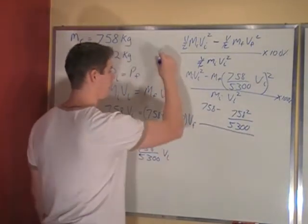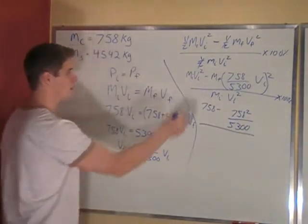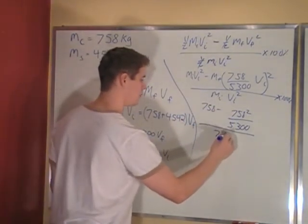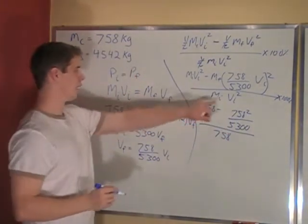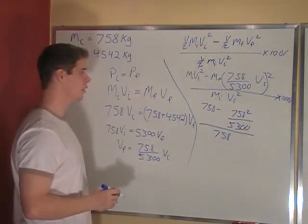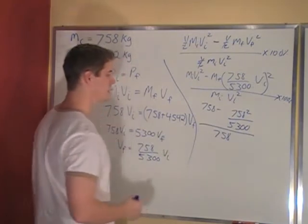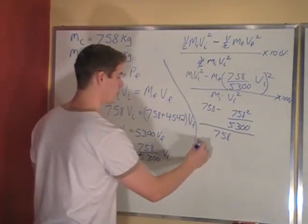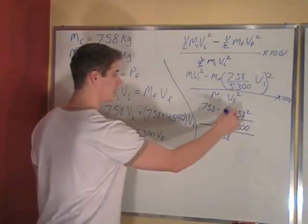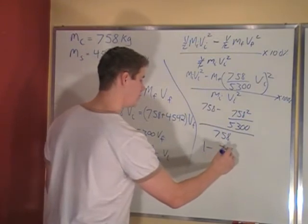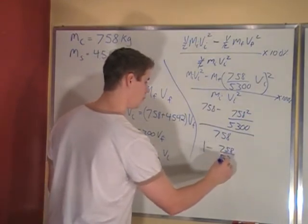This is all divided by mivi². Initial mass is 758. Initial velocity squared has been canceled out. So all I am left with is this. I can divide 758 into both of these terms, which leaves me 1 minus, cancel out one of those squareds, which will give me 758 over 5300.